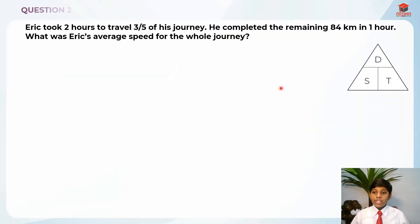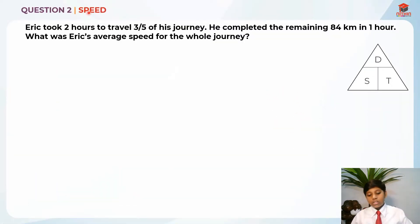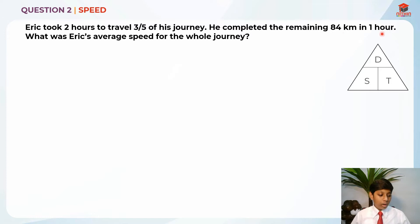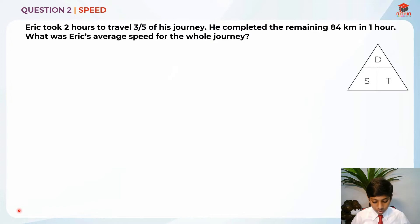So this is question 2 and this question is testing us on speed. Let's read the question first. Eric took 2 hours to travel 3/5 of his journey. He completed the remaining 84 kilometers in 1 hour. What was Eric's average speed for the whole journey?